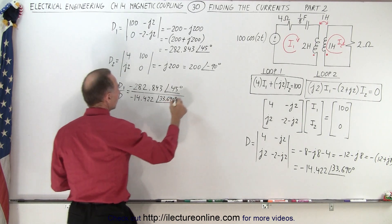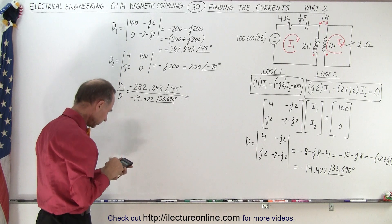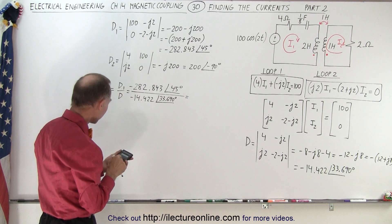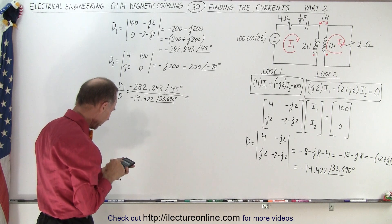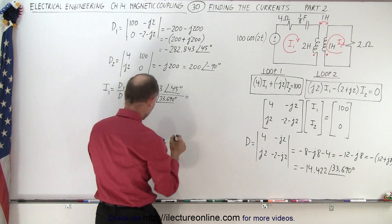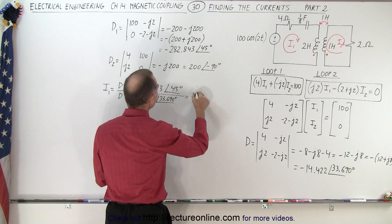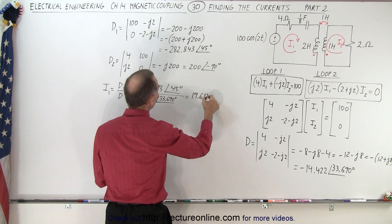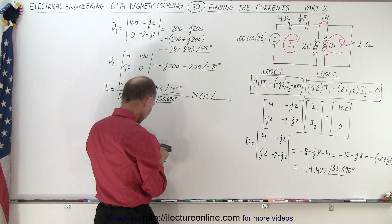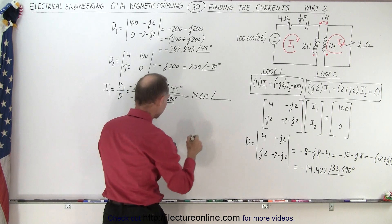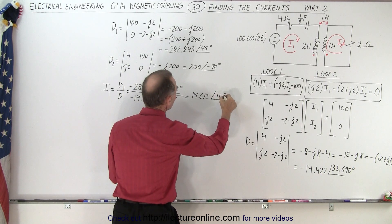So this is equal to 282 divided by 14.422, and we get 19.612 with a phase angle of 45 minus 33.69. So we get 11.31 degrees.